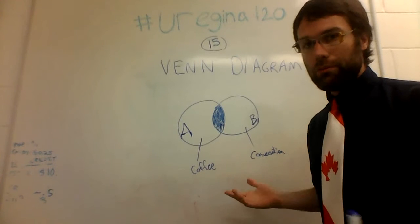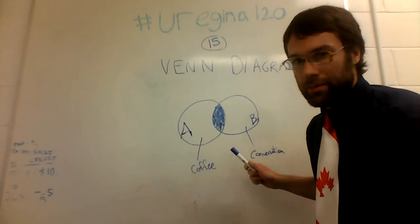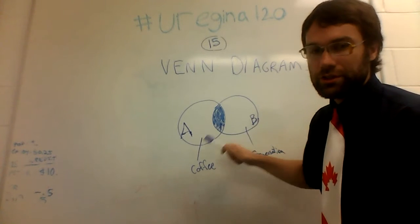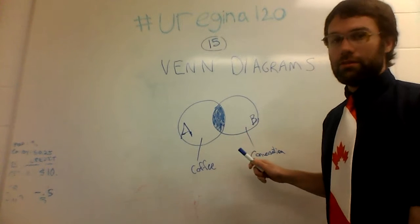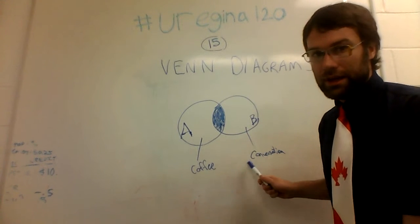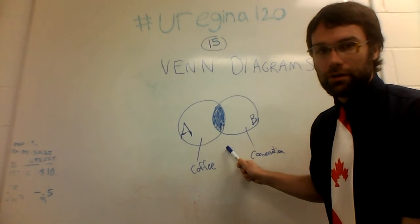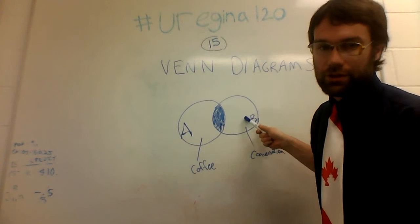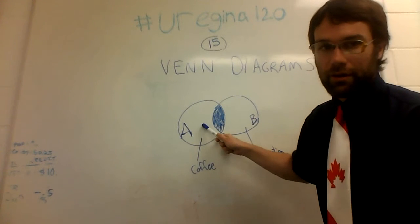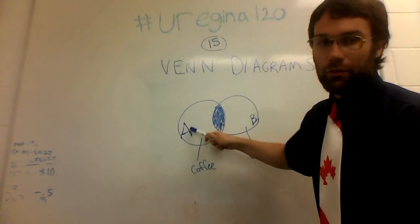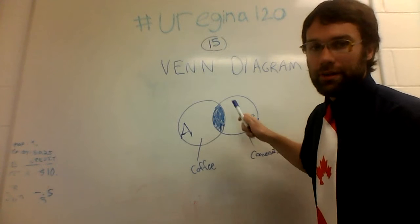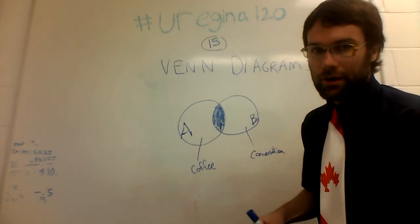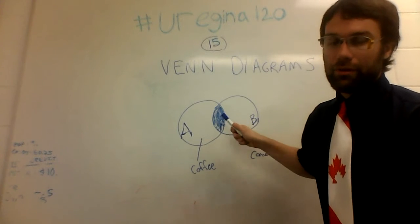So what we just did there is we have a way of describing two events or things that happen in a relationship between the two. In that there's the days where I have neither coffee nor coherent conversation. And then there are days where I have just the coherent conversation and no coffee. And then there are days that I have coffee but no coherent conversation. And then there's also this middle area that's shaded where the days that I have both coffee and coherent conversation.